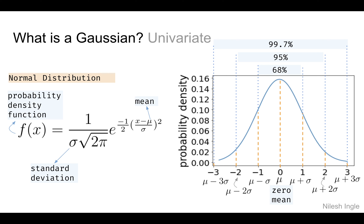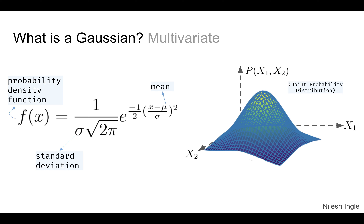So far we looked at the univariate case with just one feature. Now imagine that in addition to counting the number of apples on a tree, we are also interested in counting the average weight of an apple. With two features, the plot would look like a 3D surface where the y-axis represents the joint probability density for both features x1 and x2. That's the multivariate case.